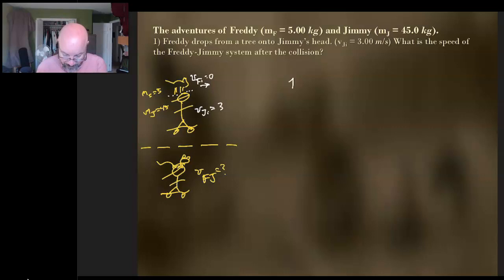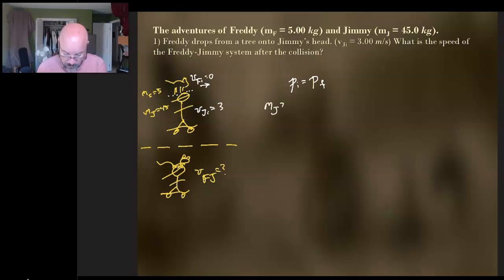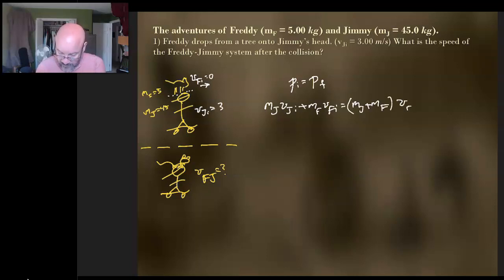So we're going to write it out here. Initial momentum equals final momentum — we're going to conserve. So we have the mass of Jimmy times the velocity of Jimmy initial, plus the mass of Freddy times the velocity of Freddy initial, and that has to be equal to the mass of Jimmy plus the mass of Freddy — because they're combined — times their speed as they move together. Freddy's initial speed is zero, so we're going to drop that term.